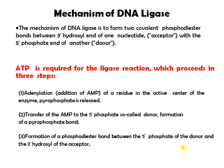In the first step, there is adenylation of a residue in the active center of the enzyme, then pyrophosphate is released. This is followed by transfer of the AMP to the 5-phosphate, the so-called donor, and formation of a pyrophosphate bond. Then there is formation of the phosphodiester bond between the 5-end of the donor and the 3-hydroxyl of the acceptor.